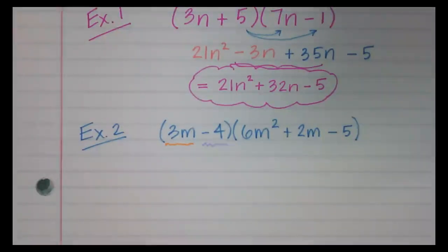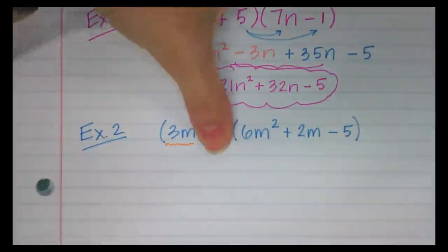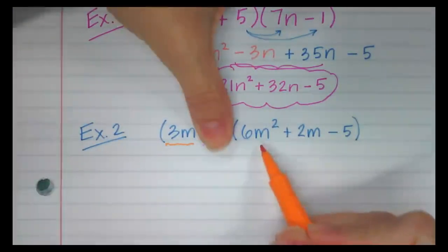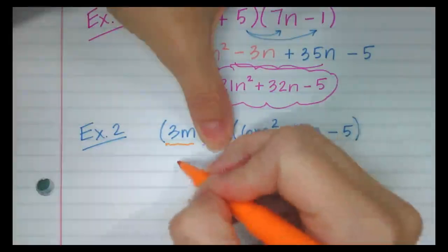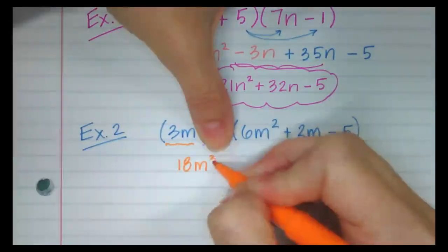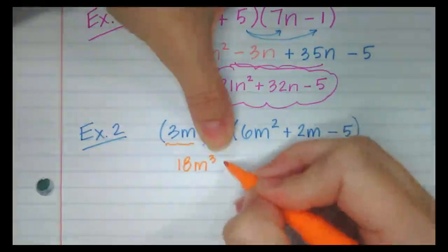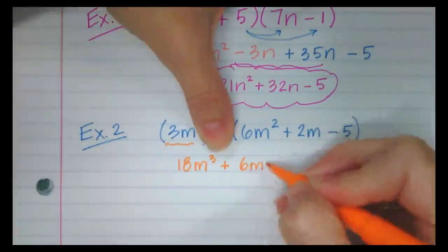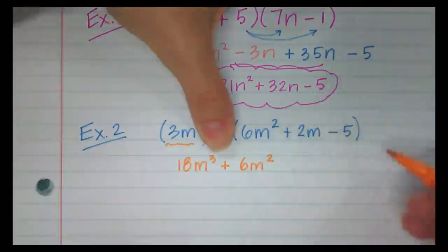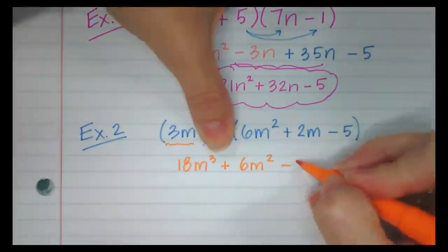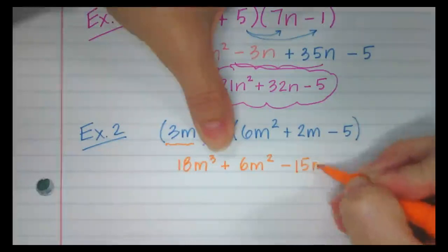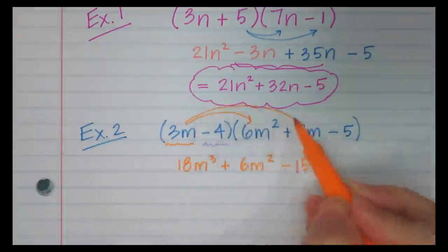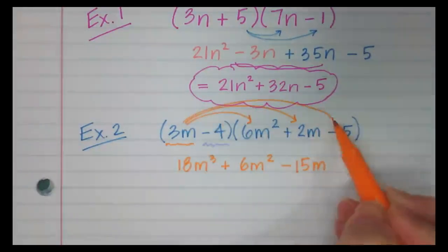First up, I'm going to cover the negative 4 and distribute 3m. So 3m distributed to 6m squared is going to be 18m cubed, plus distributing the 3m gives 6m squared, and then distributing the 3m to the last term gives minus 15m. That is what I got when I distributed 3m to that trinomial.